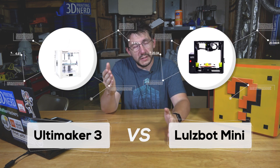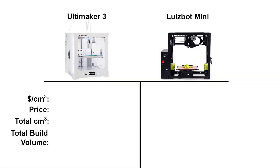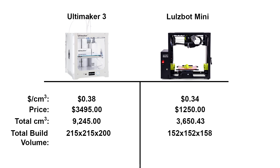The Ultimaker 3 is 38 cents per cubic centimeter of build volume, whereas the LulzBot Mini is 34 cents per cubic centimeter. The Ultimaker 3 is almost three times the price of the LulzBot Mini, and the Ultimaker 3 build volume is nearly 5,600 cubic centimeters larger.